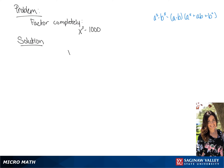We're going to factor x cubed minus 1,000. We have the difference of cubes formula in the top right corner. So our a term will be x, and our b term will be the cubed root of 1,000, which is 10.